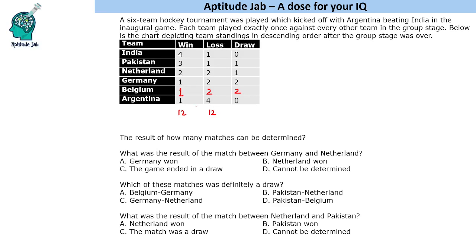To solve this, we will make a table of the matches played. The table has teams: India, Pakistan, Netherland, Germany, Belgium, and Argentina across both axes.